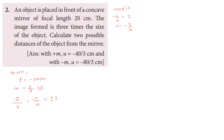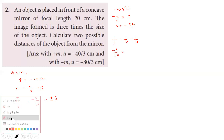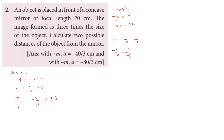Using the mirror formula: 1 by f equals 1 by v plus 1 by u. Substituting v equals minus 3u: 1 by (minus 3u) plus 1 by u equals minus 1 by 20. This simplifies to minus 1 by 3u plus 1 by u equals minus 1 by 20.